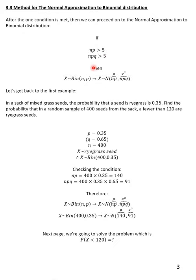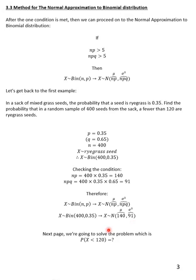Once you satisfy the condition, you can convert binomial distribution to normal distribution. To find the mean (mu) for the normal distribution, use mu = n × p. To find the variance, use n × p × q. For our problem, with n = 400 and p = 0.35, the mean is 140 and the variance is n × p × q. Now we can solve P(X < 120).